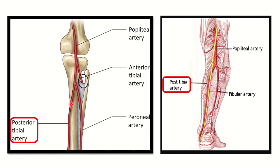The posterior tibial artery lies in the posterior compartment of the leg. The structures which lie in the posterior compartment will be closely related to the posterior tibial artery, while structures in the anterior and lateral compartments are not related to it. There are several muscles in the posterior compartment, and we can see a nerve going very close to the posterior tibial artery here.